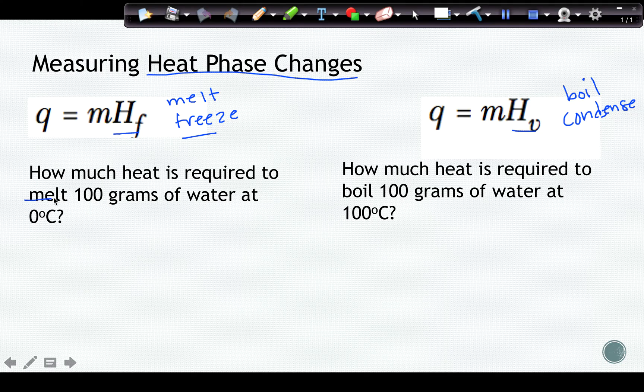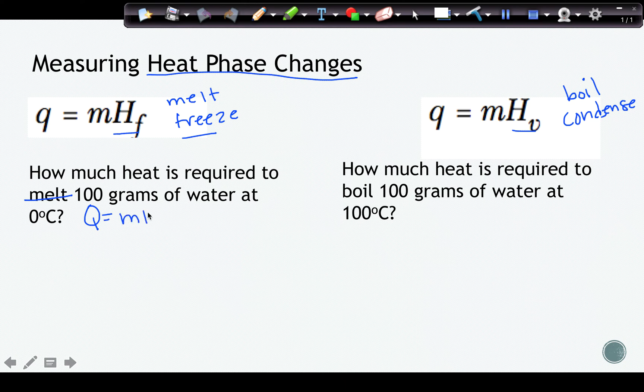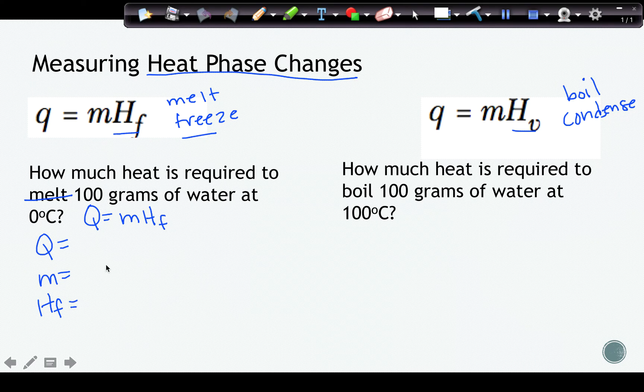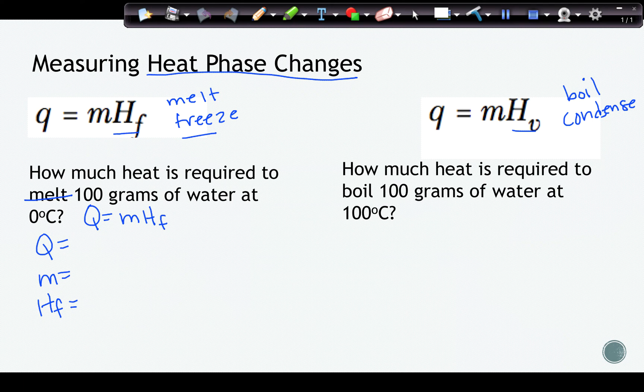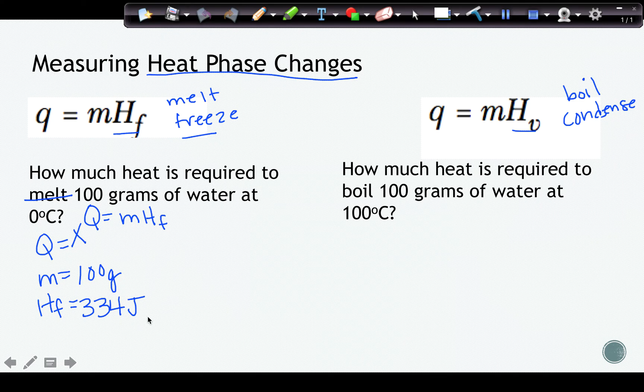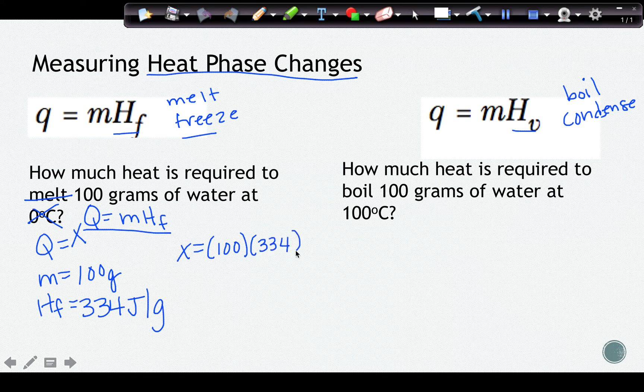So this one says how much heat is required to melt 100 grams. So I'm going to write my formula, Q equals MHF. And I am going to list out, like I did before, my variables so that I can keep track of everything. And then I'm going to plug it in and solve it using my calculator. So my Q is what I'm looking for in this problem. It says that the mass is 100 grams. And if I look back at table B, my HF is 334 joules per gram. Notice that there's no temperature in this formula. So this is just extra information. So I get X equals 100 times 334 and I get X equals 33,400 joules.